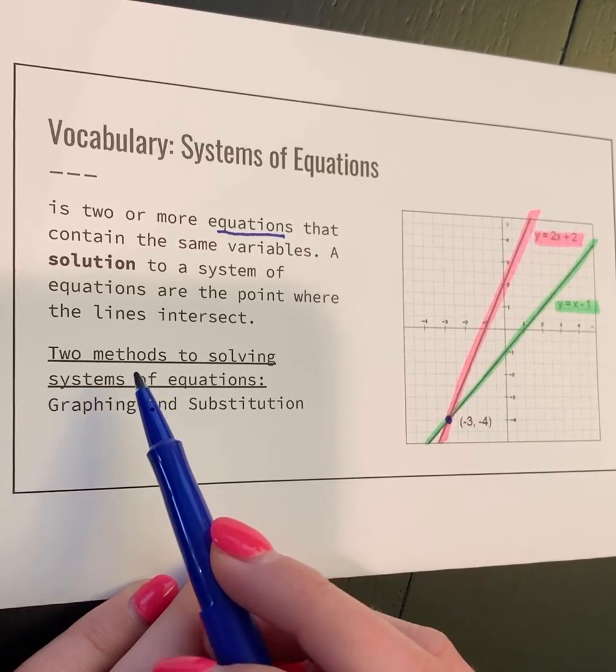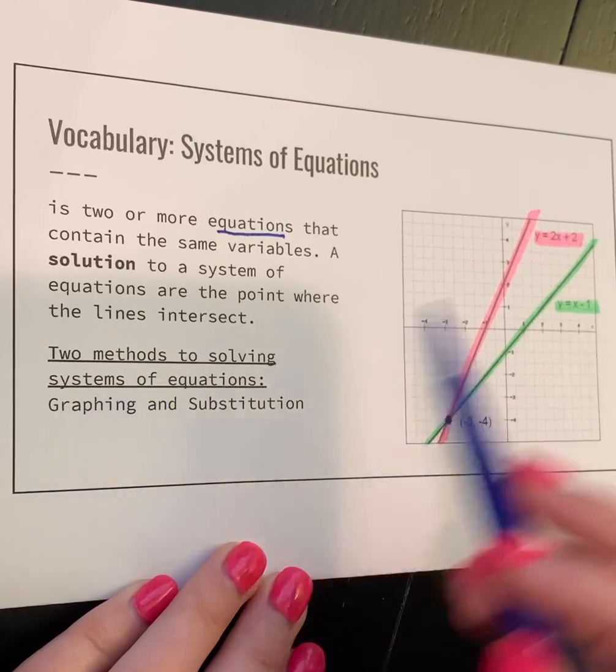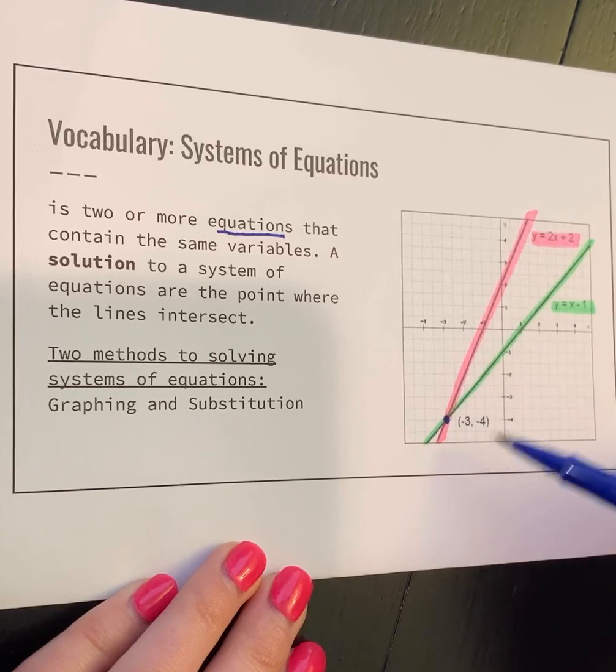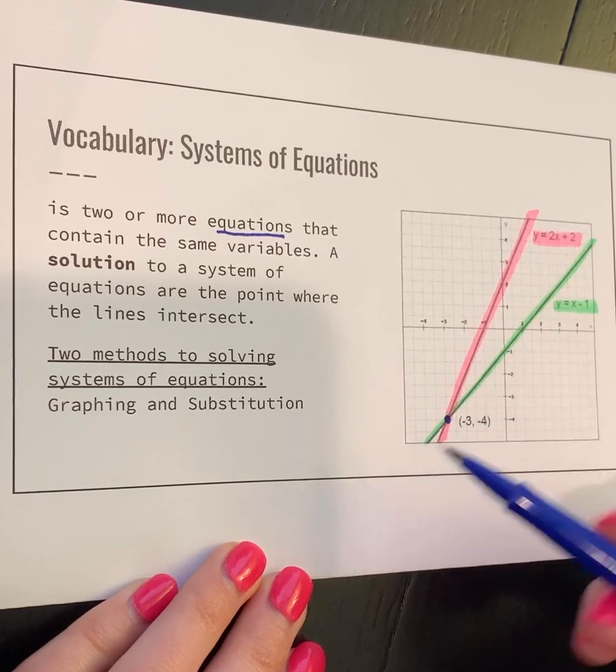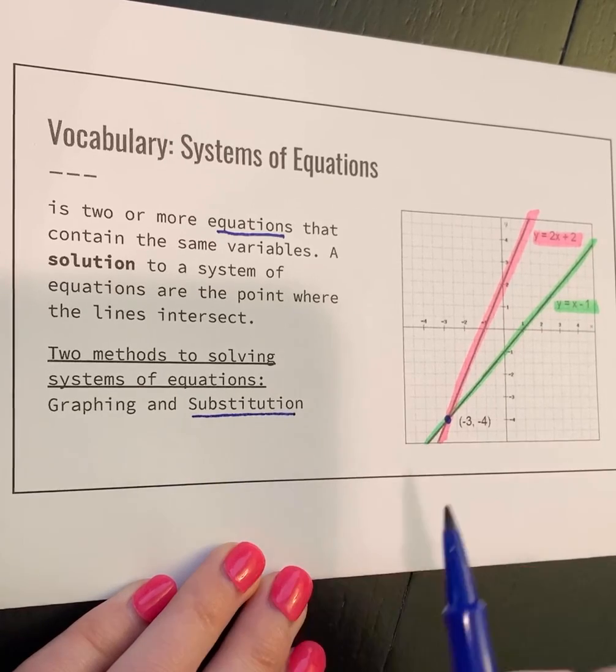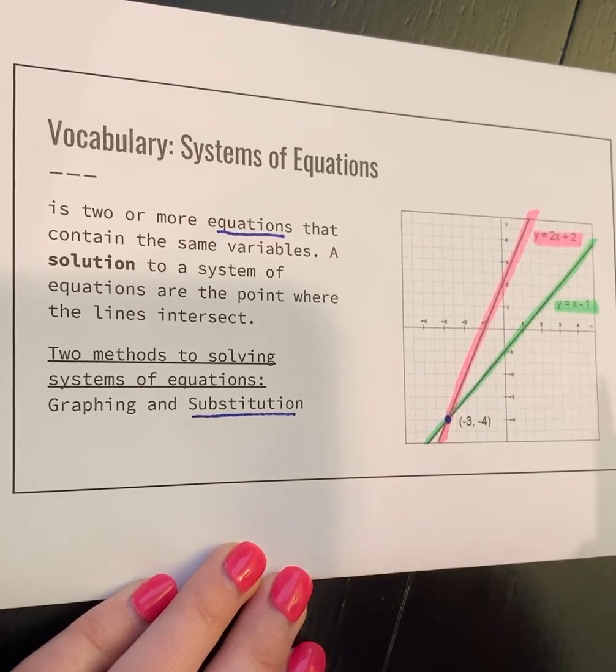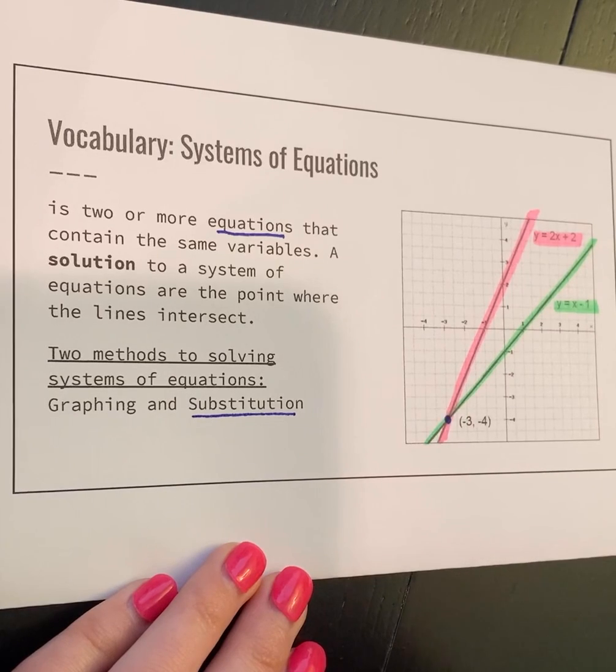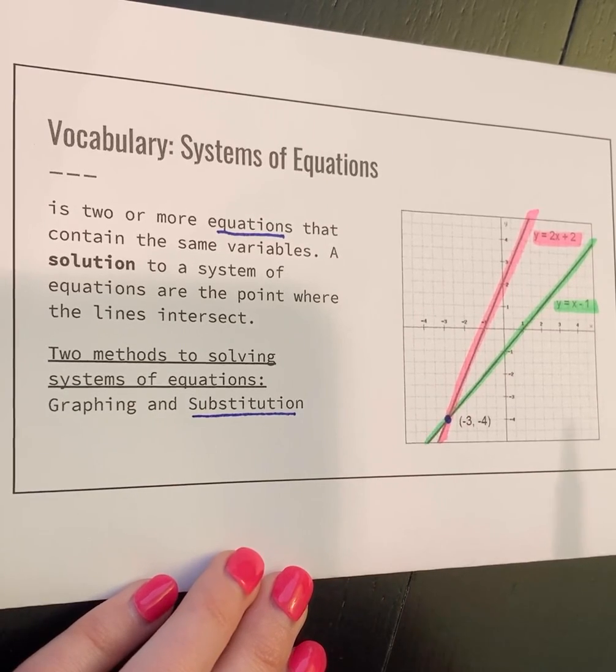There are two ways to solve systems. This is by graphing, how I have shown here. There's also an algebra way using substitution, which you will learn next week. We are going to go through four examples with solving systems of equations by graphing.